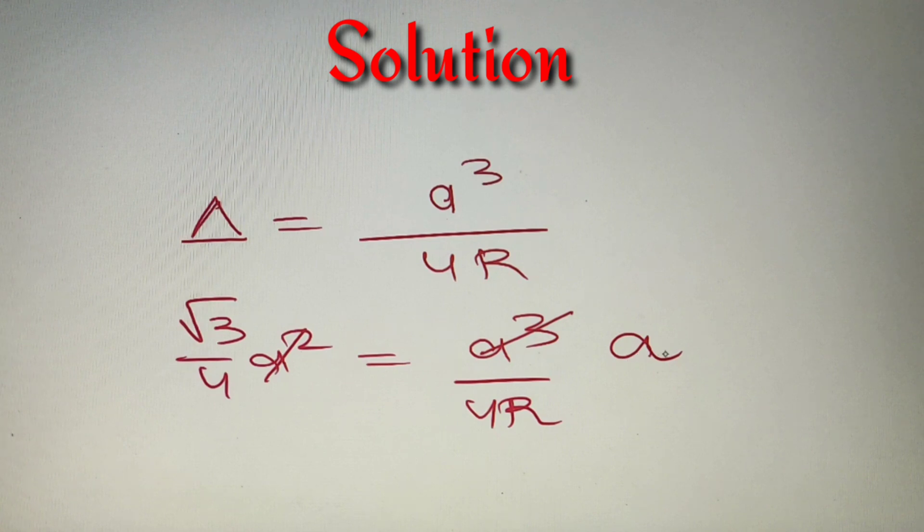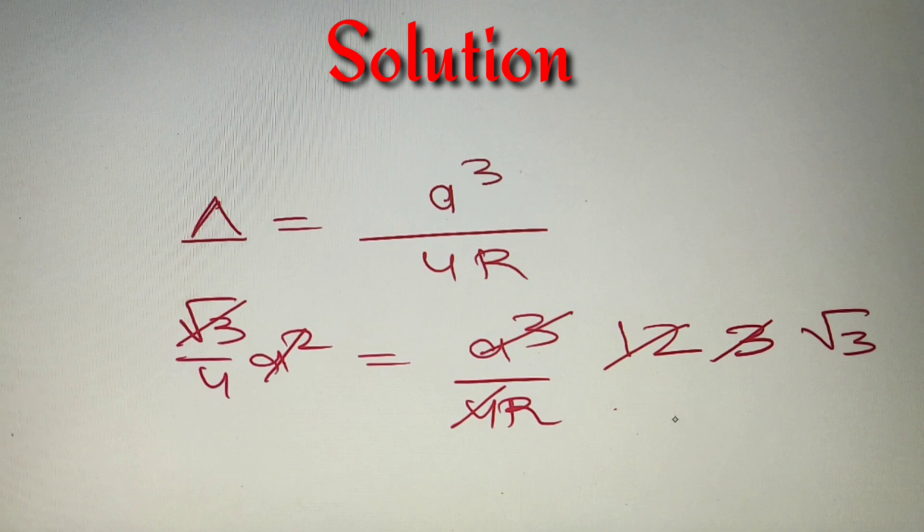Now according to our given question the value of a is 12. So we can simply put the value as 12. So we'll get √3/4 equals 12/4R. Now over here 4 and 12 will get cancelled and we will get 3/R and 3 and √3 will get cancelled and we'll get √3 and finally when we cross multiply we'll get that R equals 4√3.